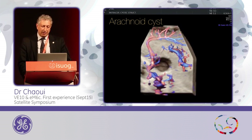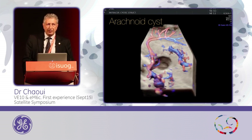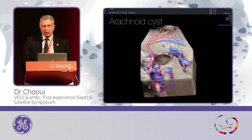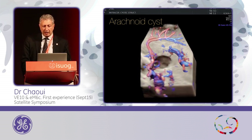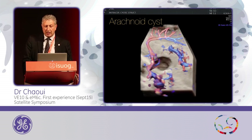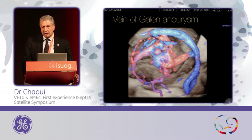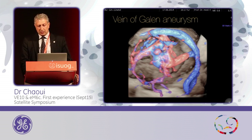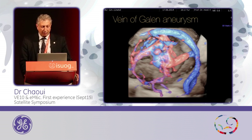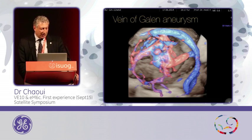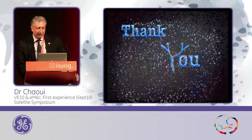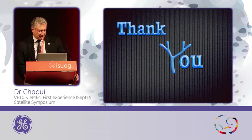In the other case, if there was a true vein of Galen aneurysm, you will have seen a lot of colors in the brain. This is another example seen in June at 22 weeks, where you see the large dilation of the vessels and the large vessels within the brain, with this cystic structure of a vein of Galen aneurysm. I would like to thank you for your attention and hope to make you curious to use this machine. Thank you.